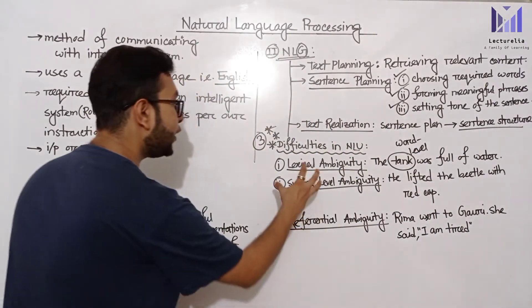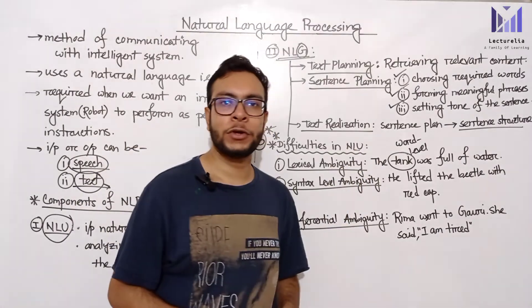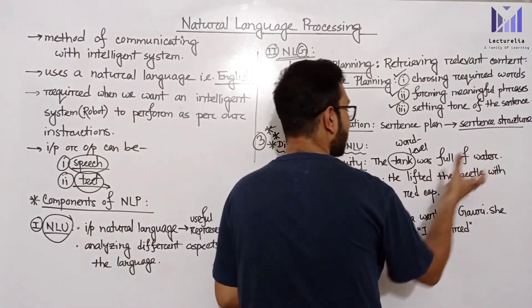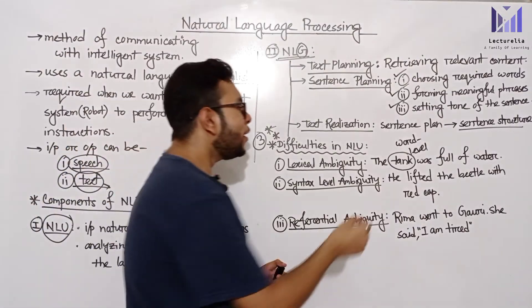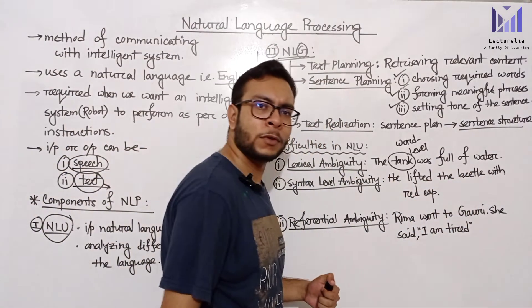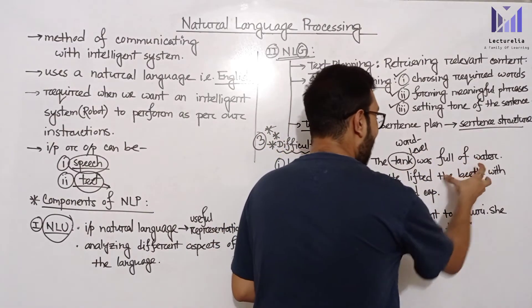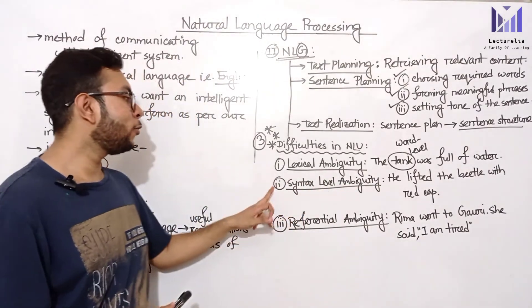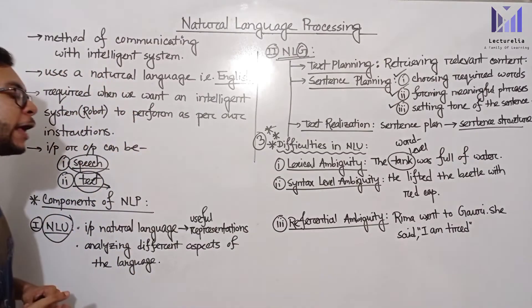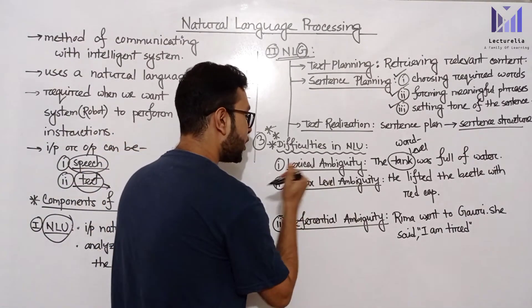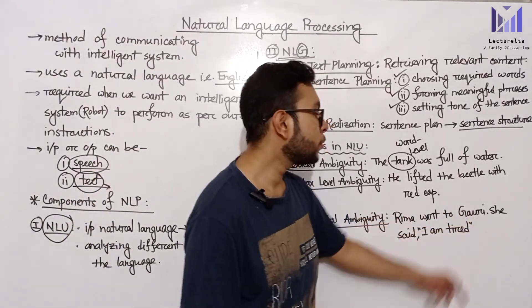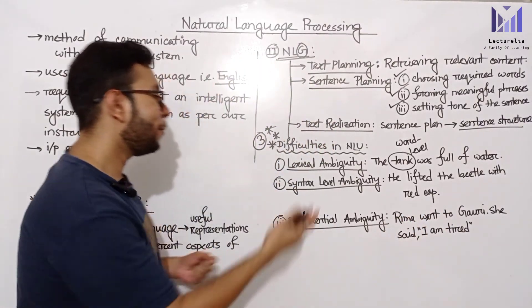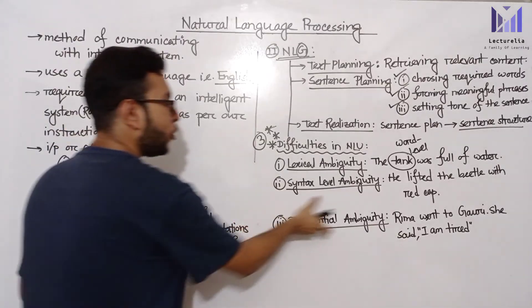The next type of ambiguity is syntax level ambiguity. For example, the sentence 'He lifted the bottle with redcap' is ambiguous — did he use the redcap to lift the bottle, or did he lift a bottle that had a redcap? The third type is referential ambiguity, involving pronouns. For example: 'Rima went to Gauri. She said I am tired.' Who is tired — Rima or Gauri? We cannot tell, which is referential ambiguity.